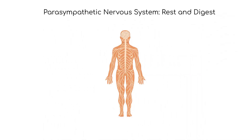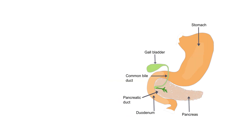Remember, the nickname for the parasympathetic nervous system is the rest and digest system. The parasympathetic nervous system promotes digestion by stimulating gastric secretions, and sends impulses to the stomach by way of the vagus nerve, cranial nerve 10.